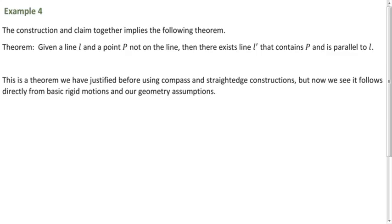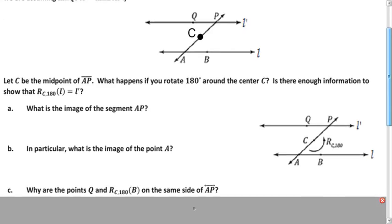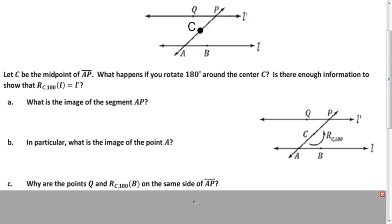Now we prove part of the alternate interior angles theorem. By this construction, alternate interior angles QPA and BAP are congruent. When we rotate segment AP 180 degrees around C, we get PA — just switching the endpoints. And we already said that rotating point A gives us point P.